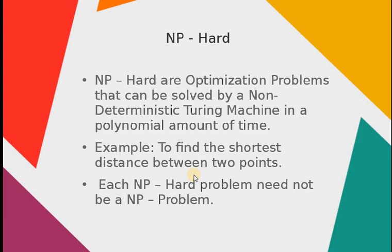Each NP-hard problem need not be an NP problem. I hope this clarifies the difference between NP-complete and NP-hard problems. The main difference is NP-complete are decision-making problems and NP-hard problems are optimization problems. Both can be solved using the non-deterministic Turing machine in a polynomial amount of time.